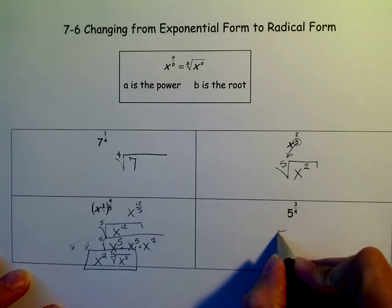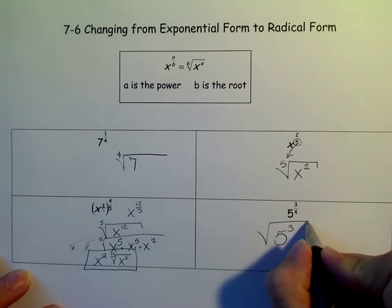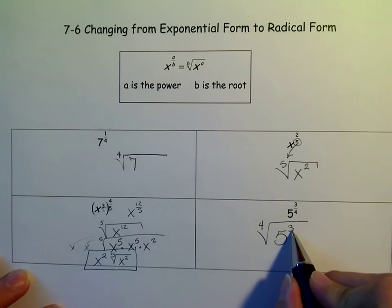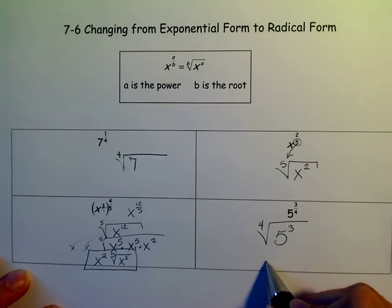And then over here, we just get 5 to the 3rd, and the 4th power of that. And since this is smaller than that, there's nothing we can take out. We need four 5s in here to bring one out.